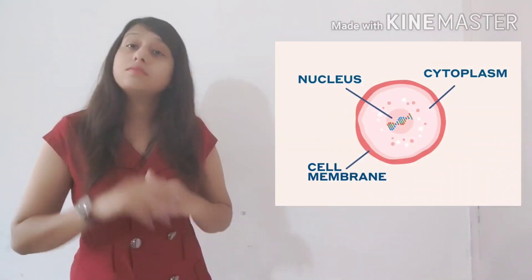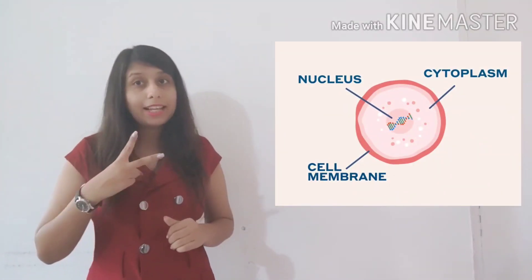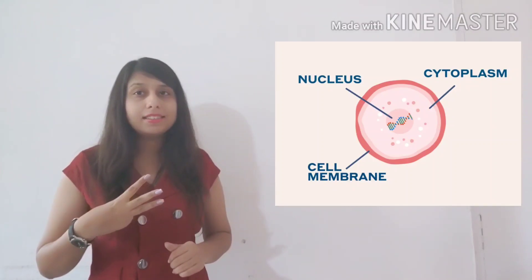So students, our cell contains three main parts. The three main parts of the cell are cell membrane, cytoplasm, and nucleus.